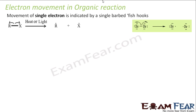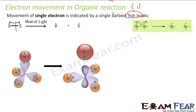Now we'll talk about movement of a single electron. If you have an alkyl halide RX, in presence of heat or light this bond breaks and each atom gets one electron — shown by a fish hook (half-headed) arrow. For example, CH3Cl in presence of light becomes CH3 dot and Cl dot — a CH3 free radical with one electron and no charge, and a Cl radical with one electron and no charge.